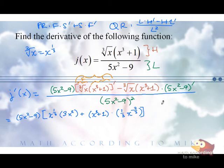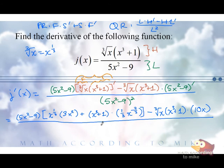But we're not done and done with this problem, because that was only this first term here. So minus high d-low. What's the derivative of the denominator? Louder. Good. 10x all over 5x squared minus 9 quantity squared.